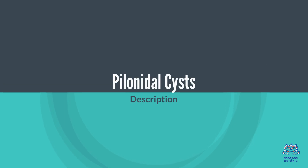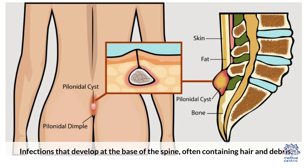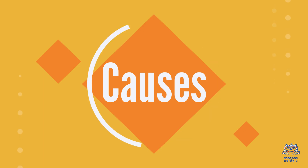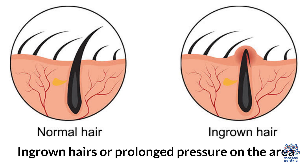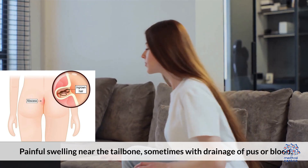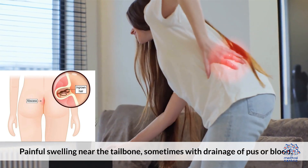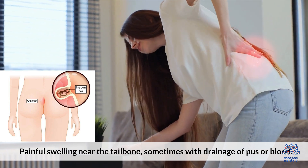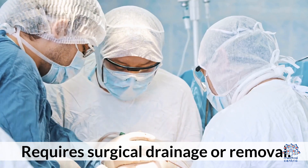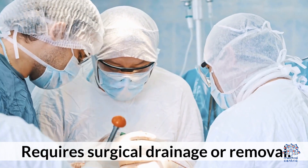Pilonidal Cysts: Infections that develop at the base of the spine, often containing hair or debris. Caused by ingrown hairs or prolonged pressure on the area. Symptoms include painful swelling near the tailbone, sometimes with drainage of pus or blood. Treatment requires surgical drainage or removal.